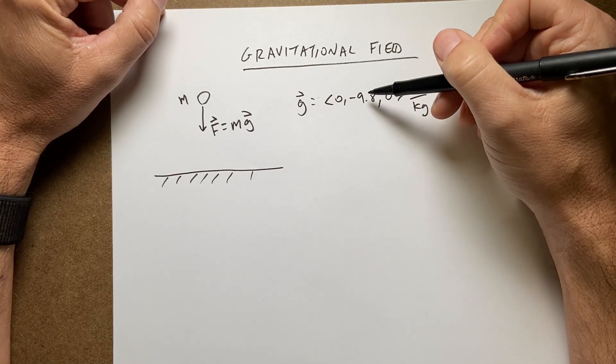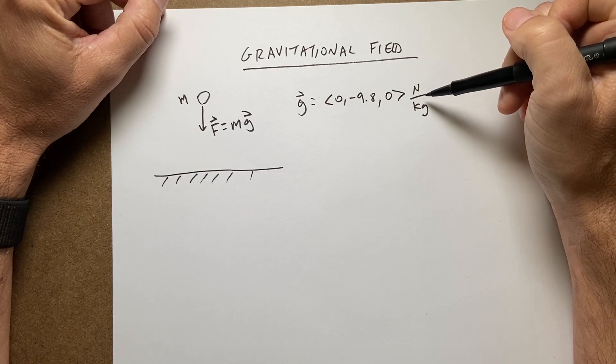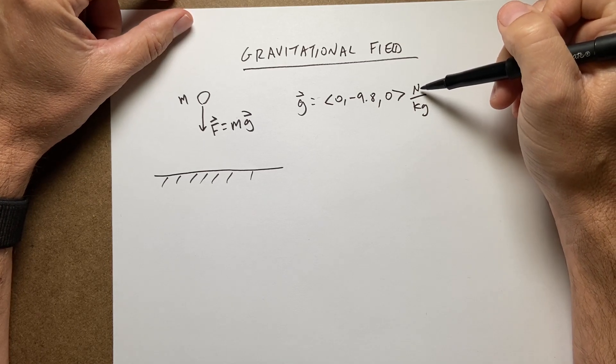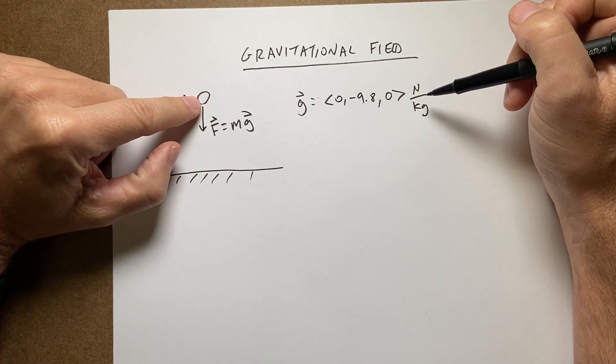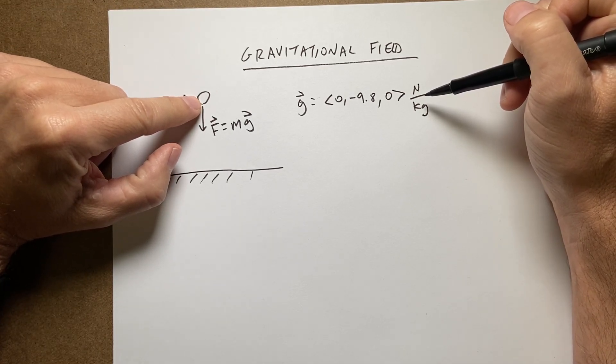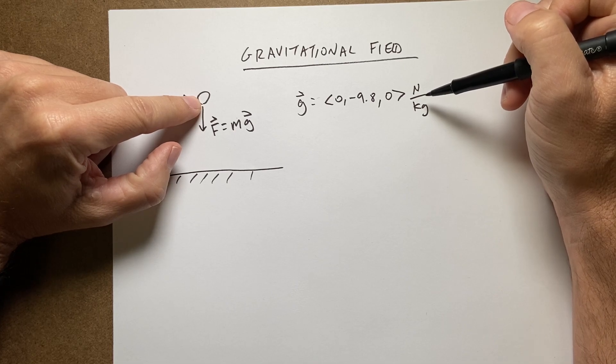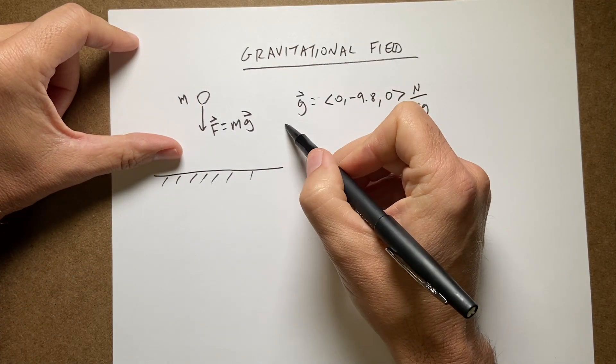It's constant, it's in the negative y direction, and it has units of newtons per kilogram. So if I have a mass of one kilogram, and then a mass of two kilograms, it's going to have twice the gravitational force. That's how this works.